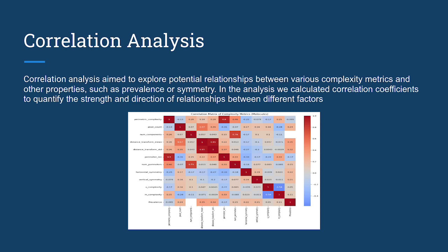Correlation analysis aimed to explore potential relationships and connections between various complexity metrics and other properties. This analysis involved calculating correlation coefficients to quantify the strength and direction of relationships between different factors. This correlation matrix shows the correlation between all the different complexity measures.